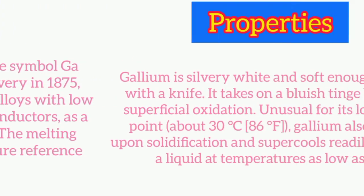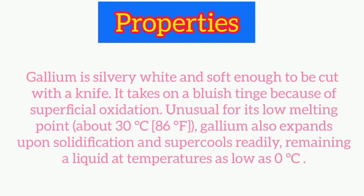Now let's understand its properties. Gallium is silvery-white and soft enough to be cut with a knife. It takes on a bluish tinge because of superficial oxidation. Unusual for its low melting point — about 30 degrees Celsius, or 86 degrees Fahrenheit.